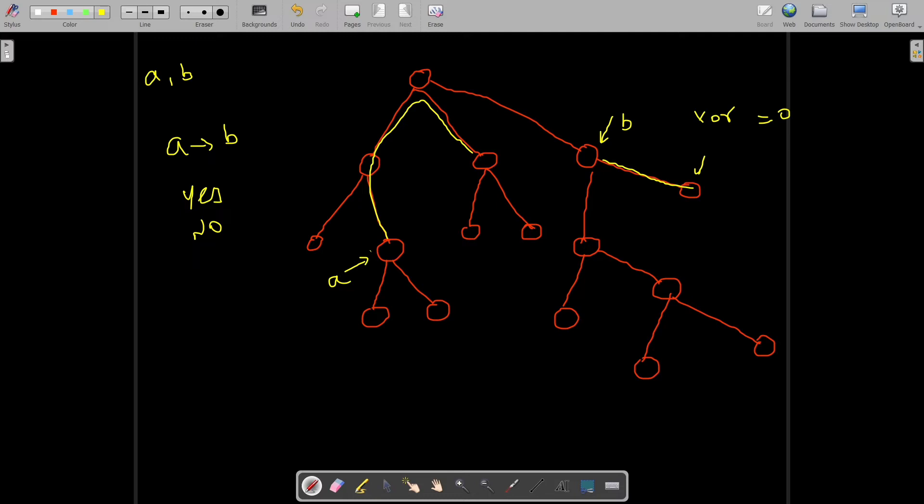To solve this question, you should know two concepts. The first one is there is only one path between every two vertices in a tree, and the second one is the XOR of a number with itself is equal to zero.